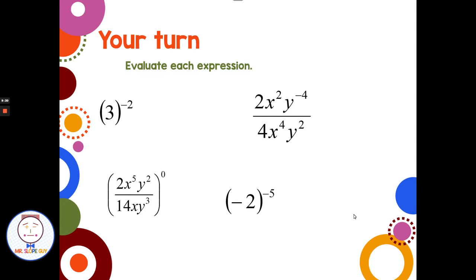Pause the video here, try these four questions, we'll come back and check. All right — 3 to the negative 2: first apply the negative exponent rule to get 1 over 3 squared. Don't multiply anything out until you have a positive exponent. Then 1 over 3 squared equals 1 over 9.